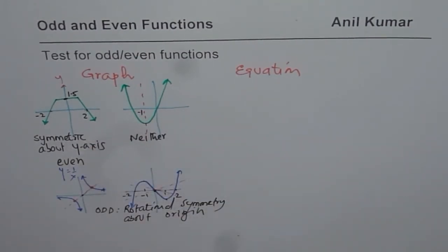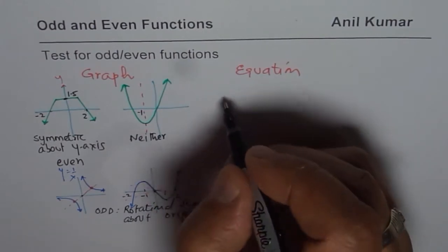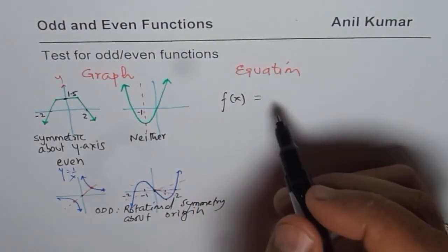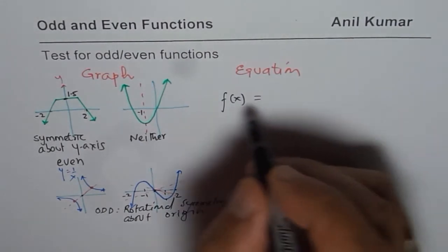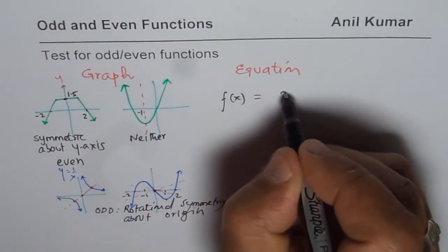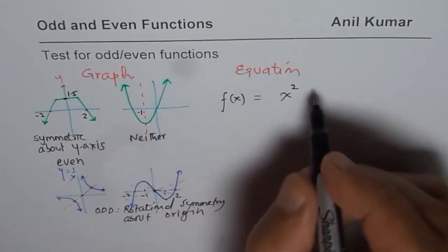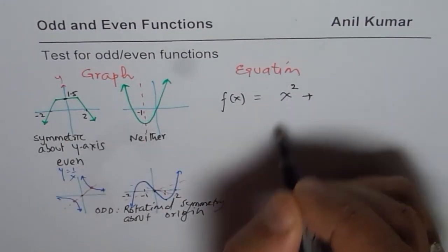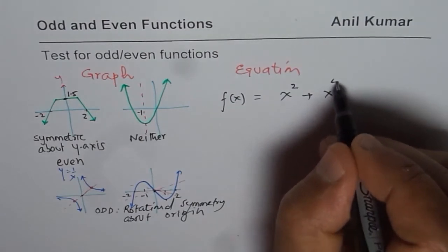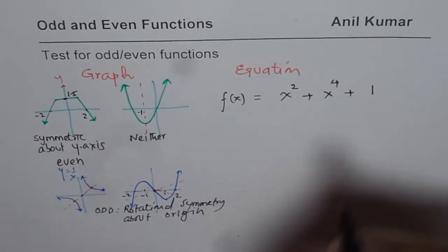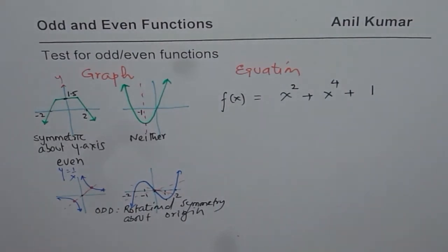That is how from a graph you can determine whether a function is even, odd, or neither. Now let me give you a few equations and we will decide how to test algebraically. If I write y equals x squared, we know it's an even function. If I add another even function to it, for example x to the power of 4, it remains even. Even if I add 1, it still remains even.